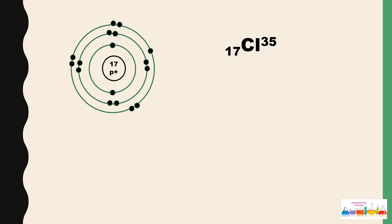If we see chlorine, the atomic number is 17 and mass number is 35. This means that 17 protons are present and 17 electrons are present. The number of protons is always equal to the number of electrons.